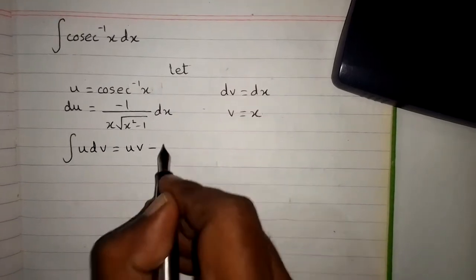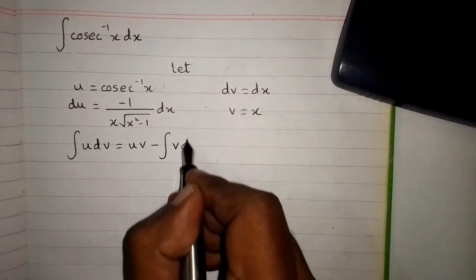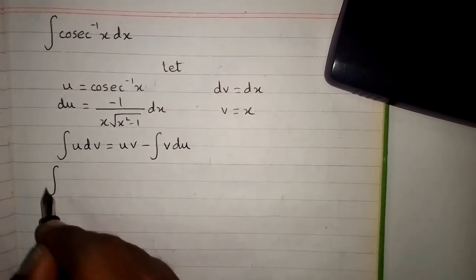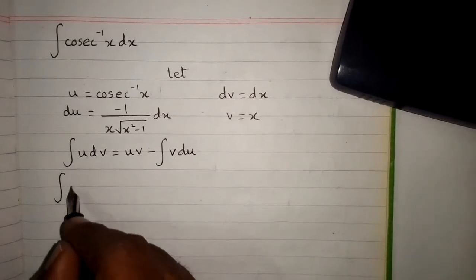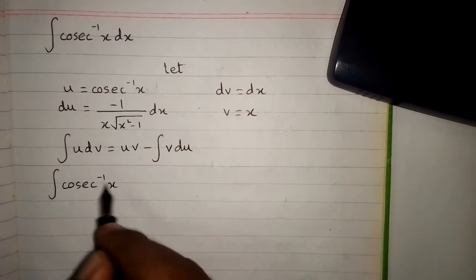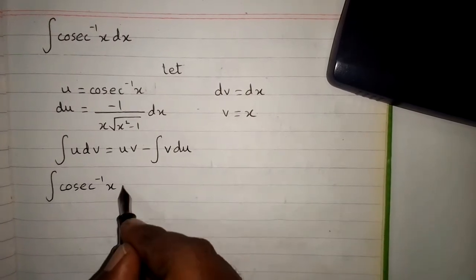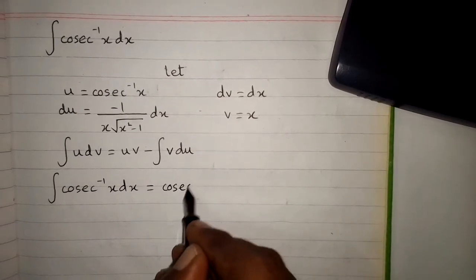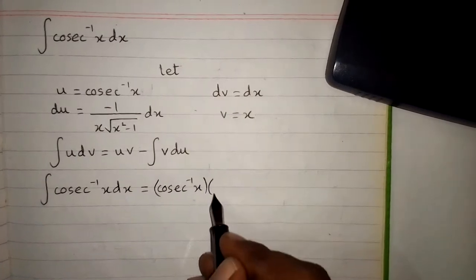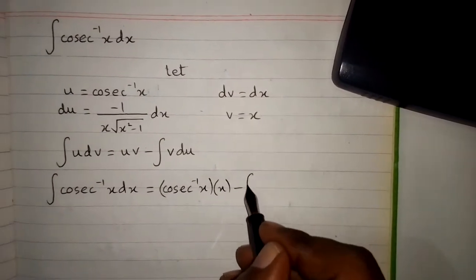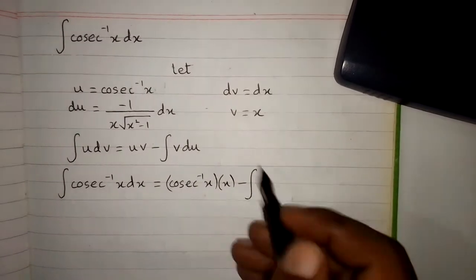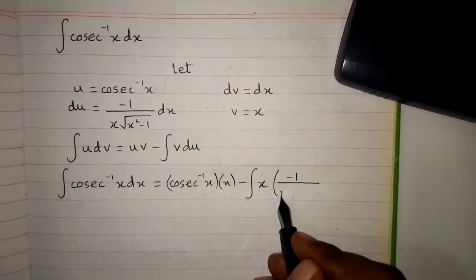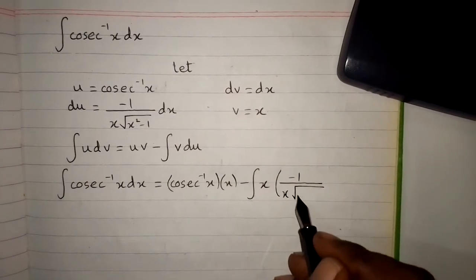The formula of integration by parts is: integral of u dv equals u·v minus integral of v·du. Putting in our values, the integral of arcsecant inverse x dx equals arcsecant inverse x times x, minus the integral of v·du, where v is x and du is minus 1 upon x times square root of x squared minus 1, dx.